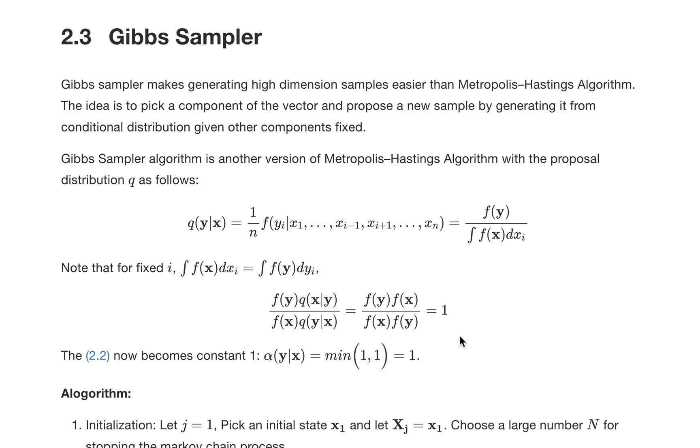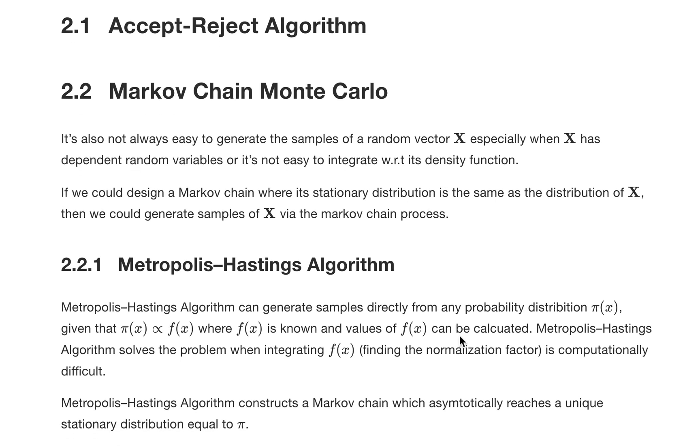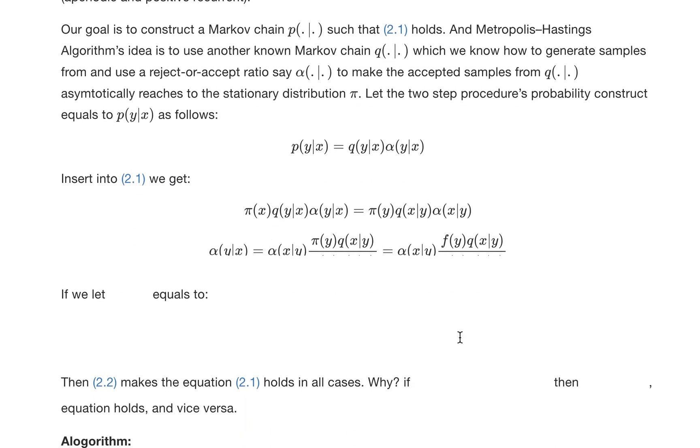Hello everyone, welcome back to my channel Predicting the Future. Today we're going to continue from the last video where we talked about the first algorithm about Markov Chain Monte Carlo, which is the Metropolis-Hastings algorithm. Today we're going to talk about one of its variants called Gibbs Sampler.